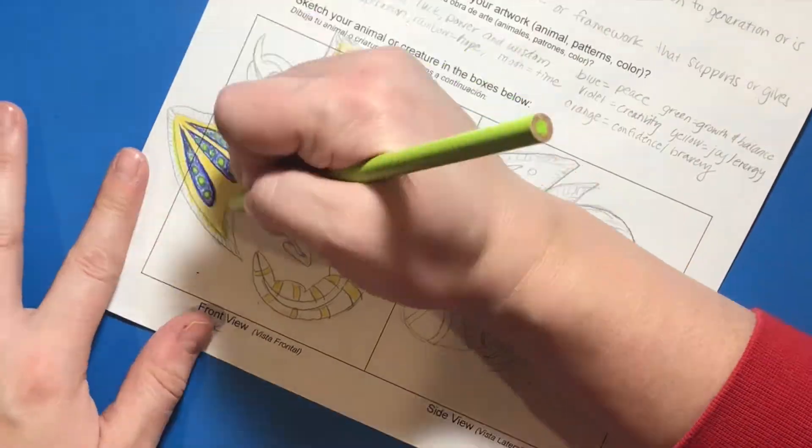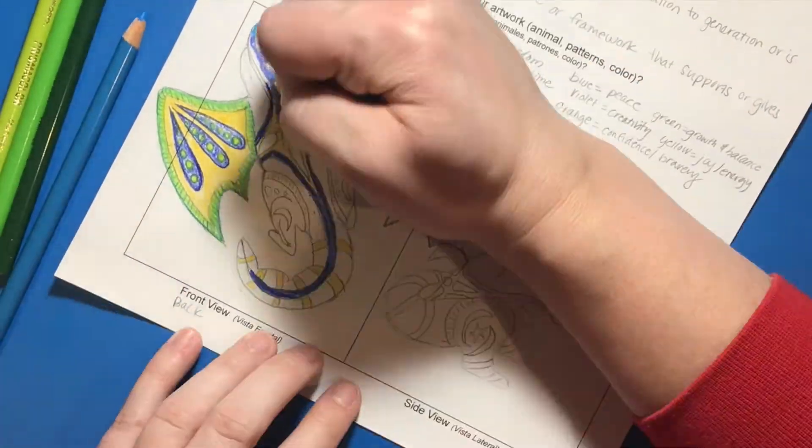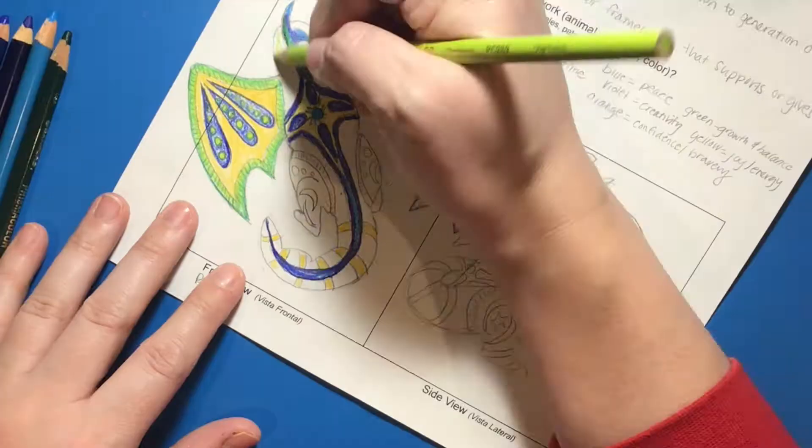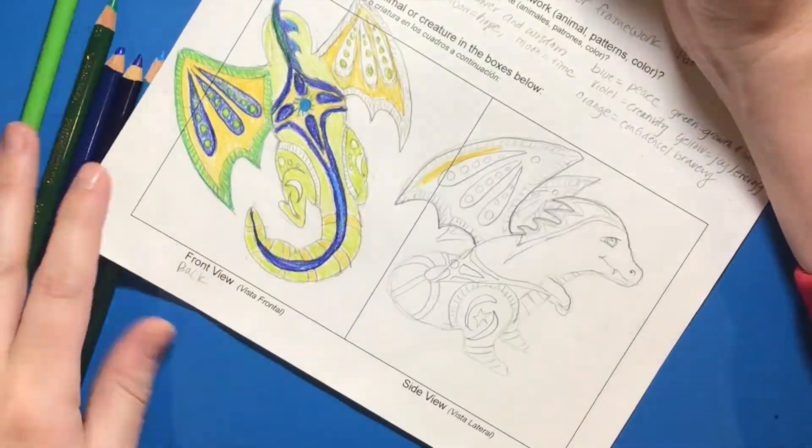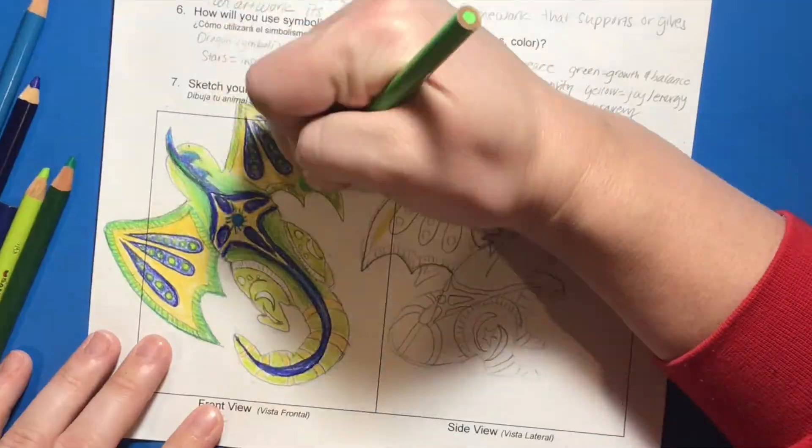Once you are finished designing your alabrije, then you want to take and plan out your colors. So remember, think about what symbolism you want to use in your colors. And also think about what colors will give you contrast.